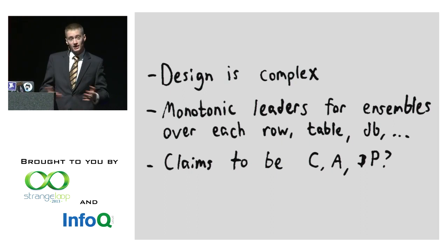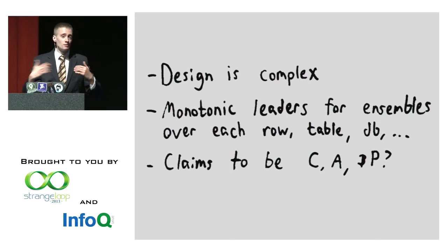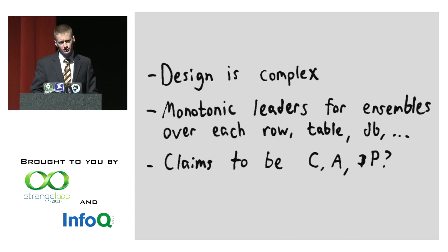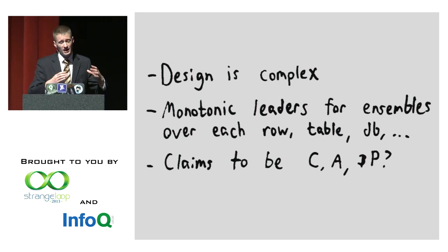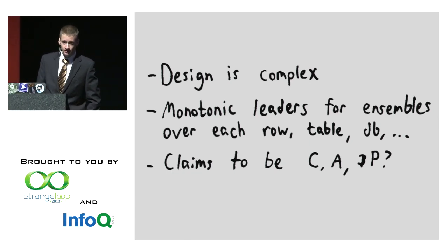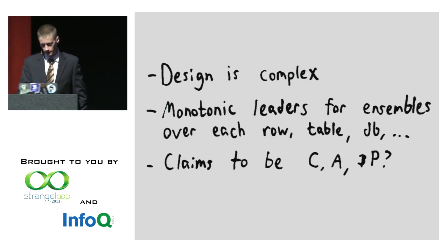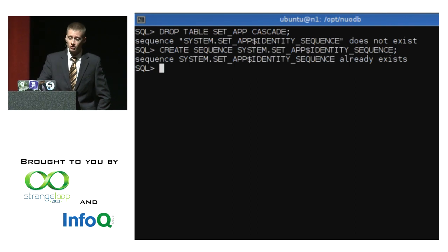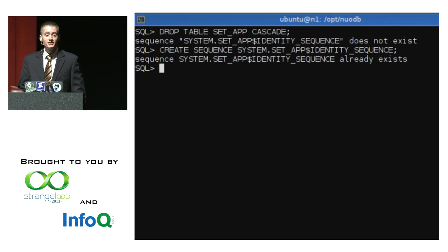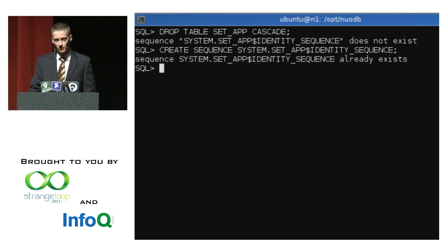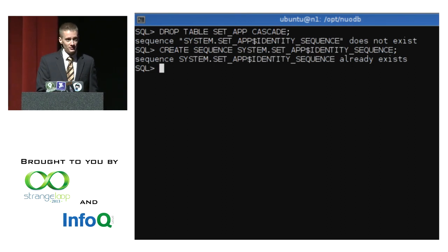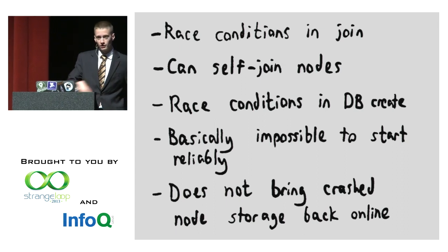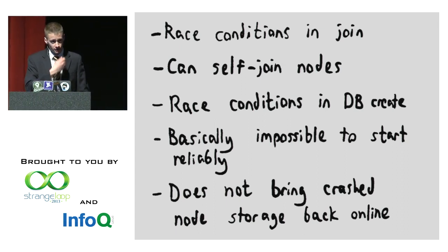The marketing claims say that if partition resistance includes the possibility for a subset of cores to continue, then NuoDB refutes the CAP theorem. You start looking into it — it's a distributed SQL database, not sharded, so the whole DB lives in every node but is replicated for performance and redundancy. It uses monotonic leaders over ensembles called atoms. At various points in the documentation it claims to be any or none of CA and P, depending on what combination of commit protocol you're using.